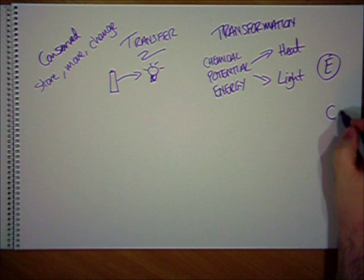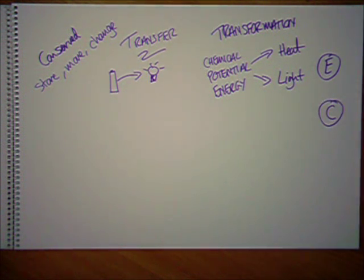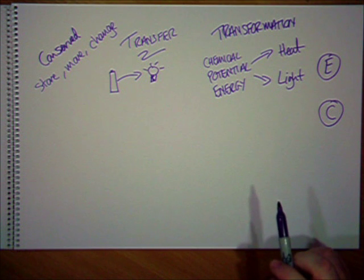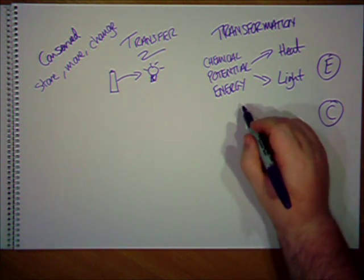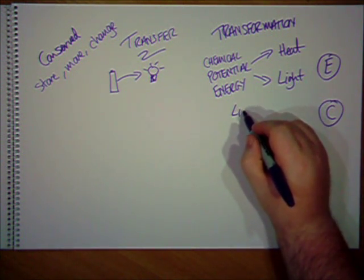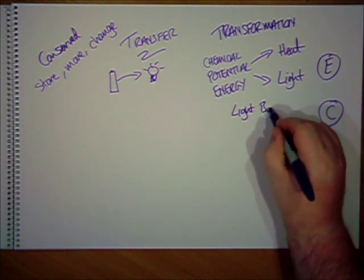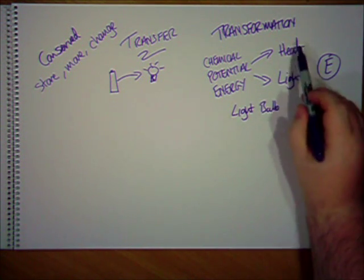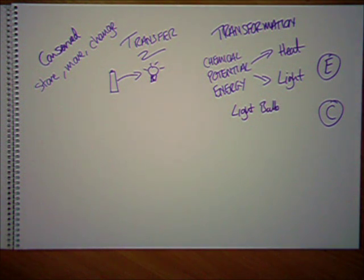If you're working towards a C grade, then you would need to be able to talk about energy transfer and transformation in terms of what's useful and what's wasted. So, in our light bulb, for example, this heat energy here, that's wasted energy, and the light energy is the useful energy.